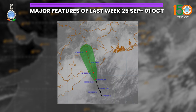This system is very likely to continue moving north-northwestwards and cross the Odisha and adjoining Andhra Pradesh coast between Gopalpur and Paradeep by tonight, 2nd October. Under the influence of this system, heavy to very heavy rainfall is expected over north coastal Andhra Pradesh, Odisha, and Chhattisgarh, with extremely heavy rainfall also predicted at some places. More details about warnings will be discussed later.